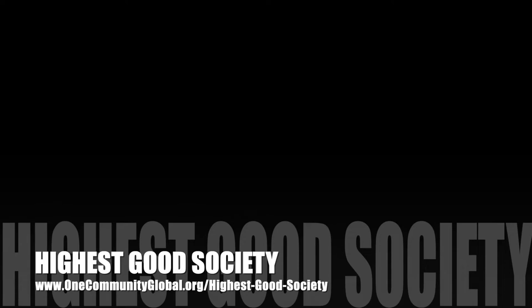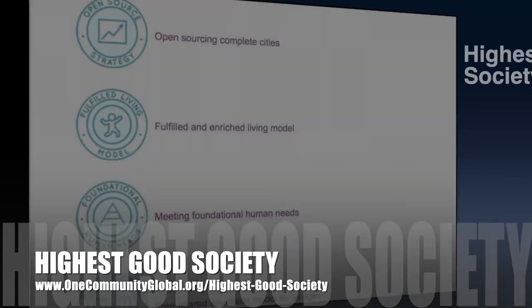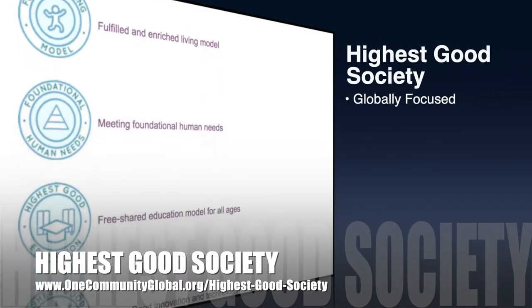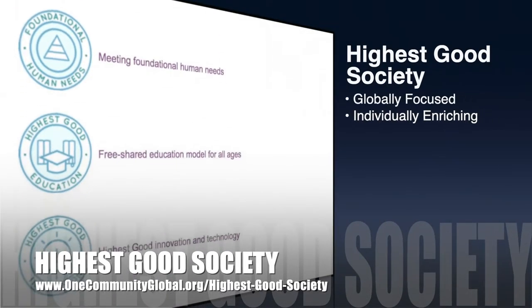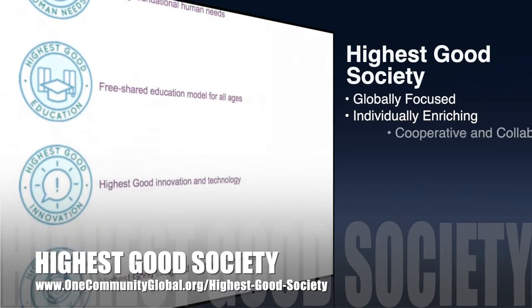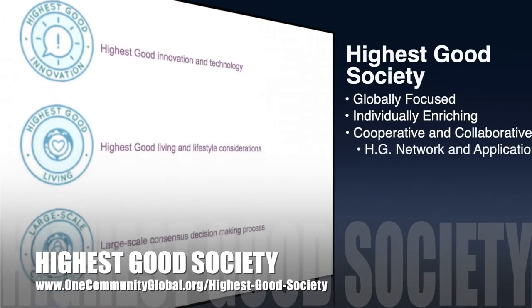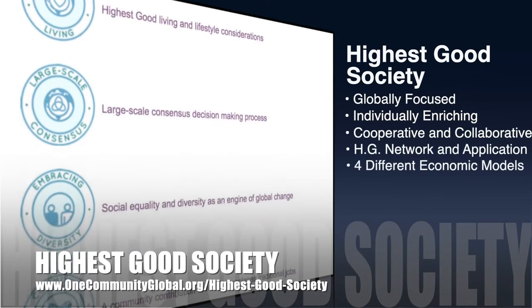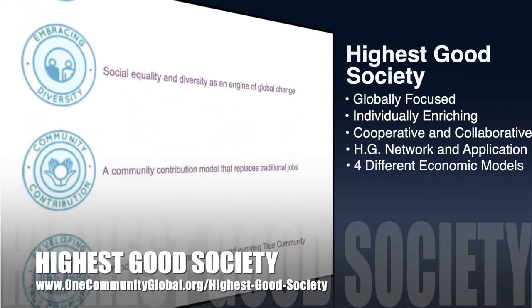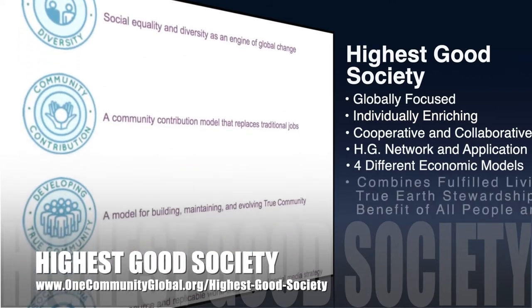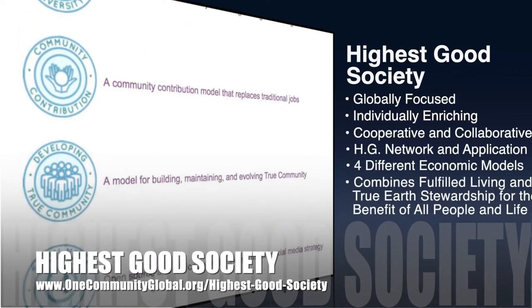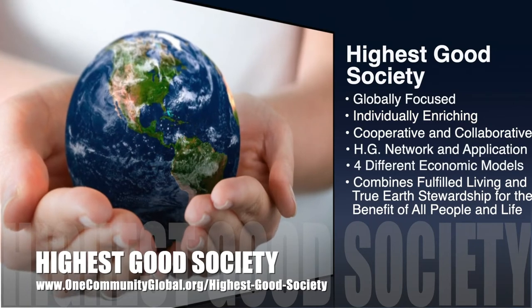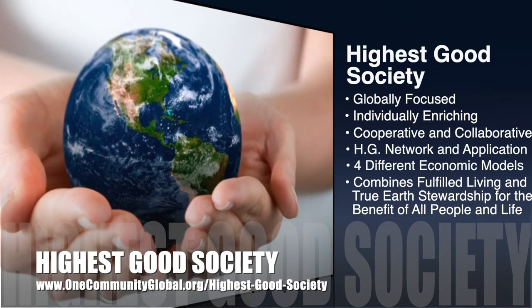The One Community approach to highest good society is globally focused, individually enriching, cooperative and collaborative. It includes a highest good network and application, four different economic models, and combines fulfilled living and true Earth stewardship for the benefit of all people and all life on this planet.